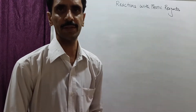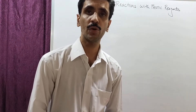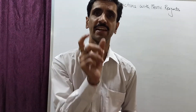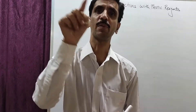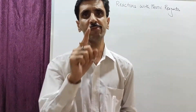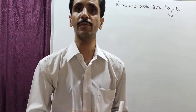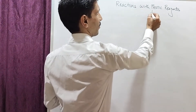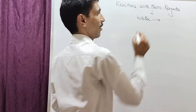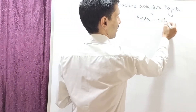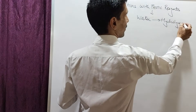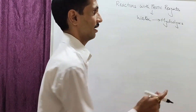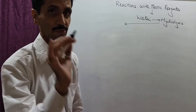We move on to property number three: reaction with protic reagents, as written on the board. Protic reagents are related to protons, i.e., H⁺ ions. The very first thing that comes to mind is water, so we also call this a reaction with water, which we call hydrolysis. The rate of hydrolysis with respect to organometallic compounds depends on the following factors.